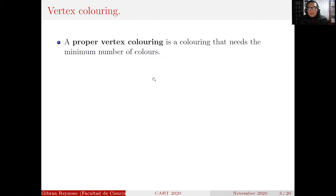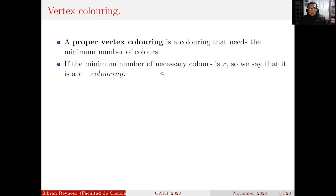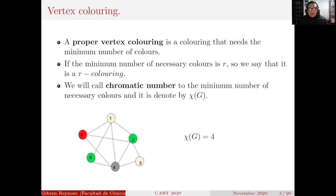A proper vertex coloring is a coloring that uses the minimum number of colors. If the minimum number of necessary colors is R, we say it is an R-coloring. We call the chromatic number the minimum number of necessary colors, denoted χ(G). In this graph, we can see that we need only four colors, so the chromatic number of G is four.